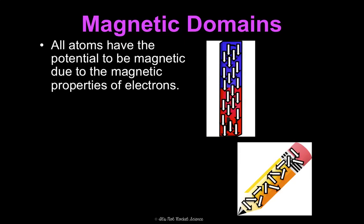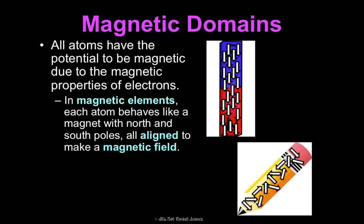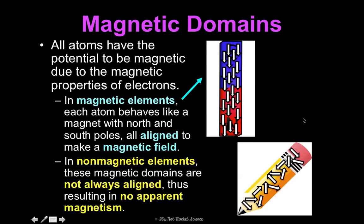Now, magnetic domains. All atoms, which we learned about, are the particles that make up matter, that are made of protons, neutrons, and electrons. They all have potential to be magnetic due to magnetic properties that electrons have. In elements that are already magnetic, every atom is behaving like a mini magnet with north and south poles, and they're all aligned in the same direction. That's what gives it magnetic properties and allows it to put off a magnetic field. So that's what we see in a bar magnet. They're all pointed the same direction. Whereas something like a pencil is not magnetic, and that's because the magnetic domains that each arrow is representing are not necessarily aligned, so they're not going to have any apparent magnetic properties like we see in this picture.